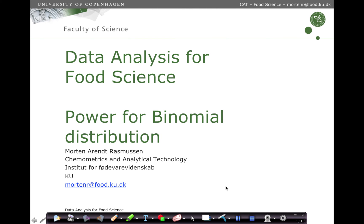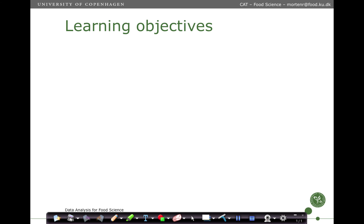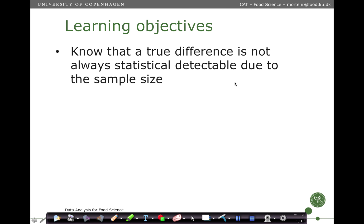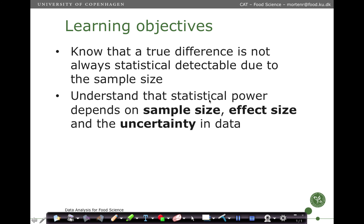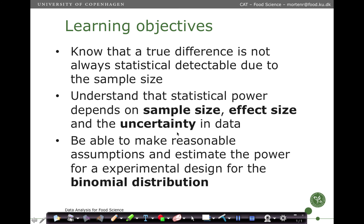In this video, we are going to go through how to calculate the power for a binomial distribution, or how to set up a trial where we evaluate the results using the binomial distribution and calculate the power or the number of samples needed to reach a certain power. The learning objective is that you should know that a true difference is not always statistically detectable due to sample size, that statistical power depends on sample size, effect size, and uncertainty in the data, and be able to make reasonable assumptions and estimate the power for an experimental design for the binomial distribution.